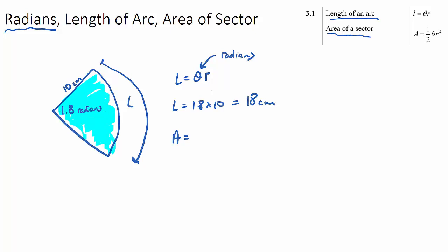The area is a half times θ, which needs to be in radians, multiplied by 10 squared. So we'd have a half times 1.8 times 100. And this would be 180 times a half, so 90 centimeters squared.